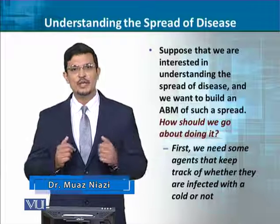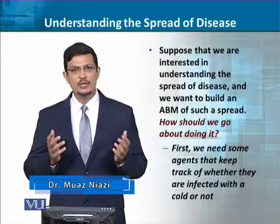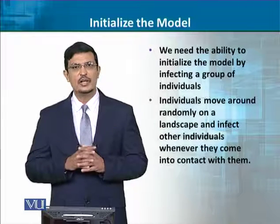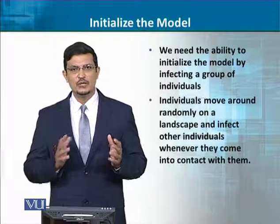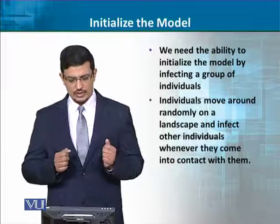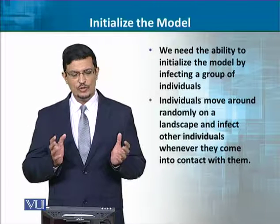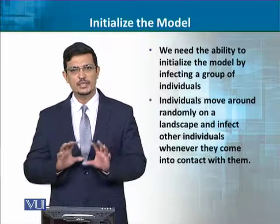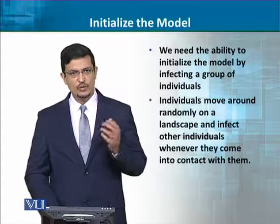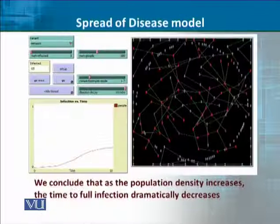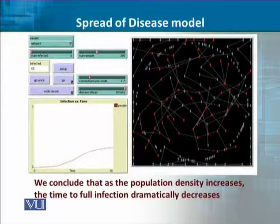To explain this, we have modeled the real world. Sabse pehla step yeh hoga ke humare paas kuch aise agents hone chahiye jinko hum track kar sakein — unki growth ke saath, unka jo spread hain, woh bimar ho rahe hain — usko kaise karein ge. Jo model hum design kar rahe hain, usme initially jitne bhi agents hain woh randomly move kar rahe hain aur woh kisi aur agent ke saath interact karte hain.